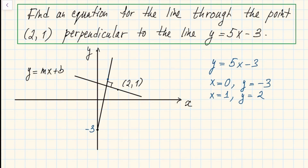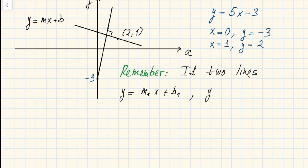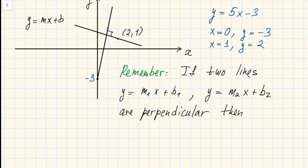First, let me give the answer so you can use it right away. Remember that if two lines y equals m1·x plus b1 and y equals m2·x plus b2 are perpendicular to each other, then their slopes satisfy the relationship m1 times m2 equals negative one.